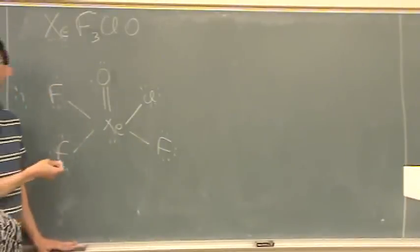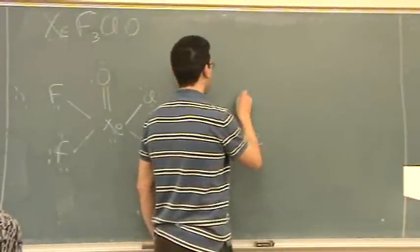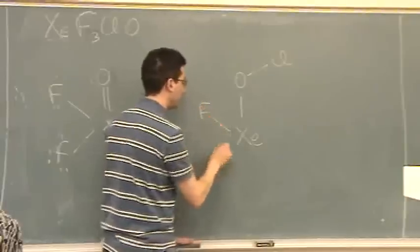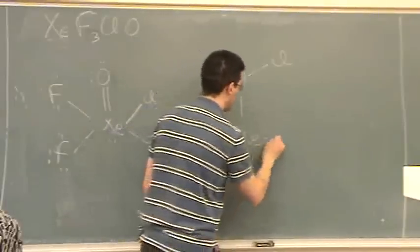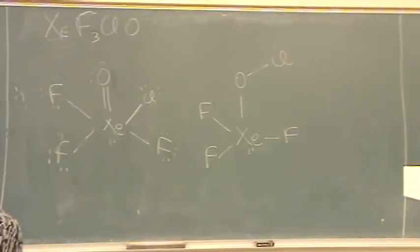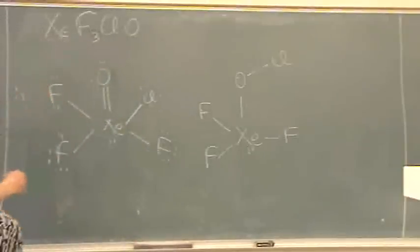And then you said, what if I tried a different skeleton? So you want something like that, which would be a trigonal bipyramidal, because there's five groups. Let's put on all the, how many did we say there was? 42?